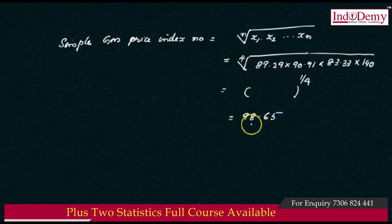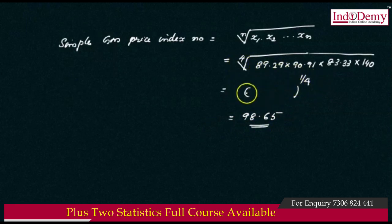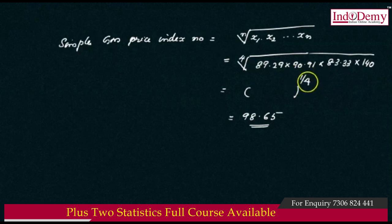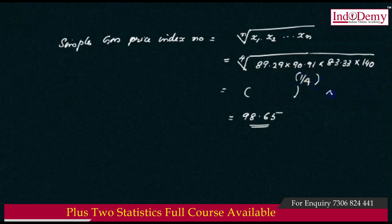The answer for the geometric mean price index number is 98.65. We multiply the values and raise to the power of 1 divided by 4 (since n equals 4). The geometric mean price index is 98.65.